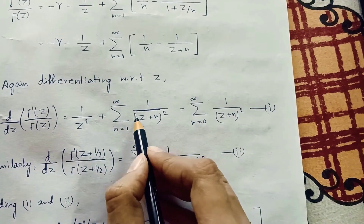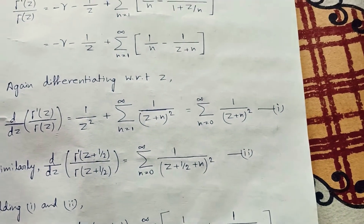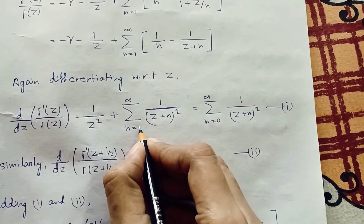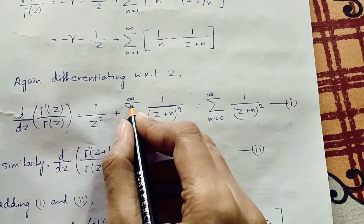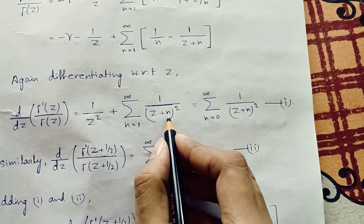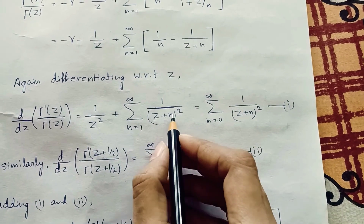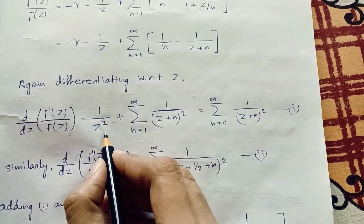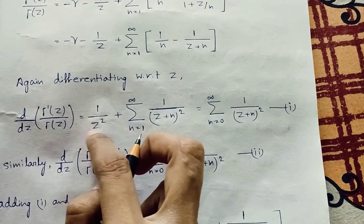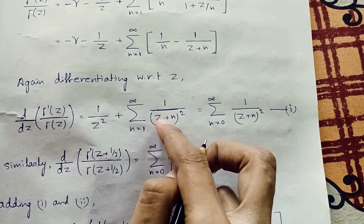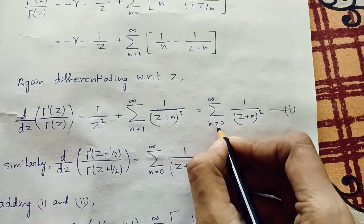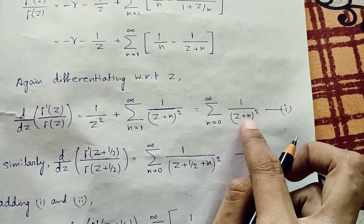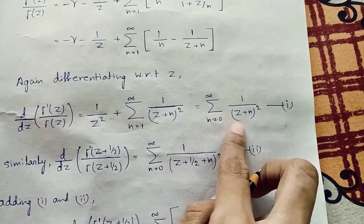The minus sign becomes plus because 1/(z+n) is in the denominator, and the summation runs from n=1 to infinity. If we put n=0 in the term 1/(z+n)², it becomes 1/z², similar to the 1/z² term already present. So to include this term inside the summation, we run it from n=0 to infinity. This is Equation 1.